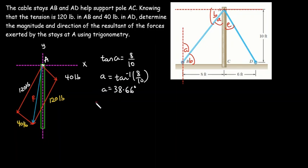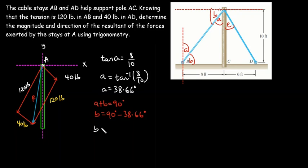Since A plus B equals 90 degrees, and we know A is 38.66 degrees, then B equals 90 minus 38.66, which gives us 51.34 degrees.